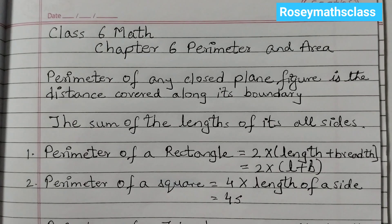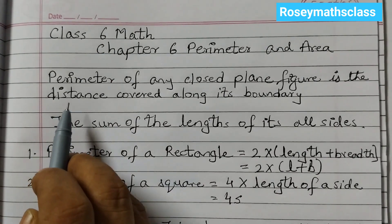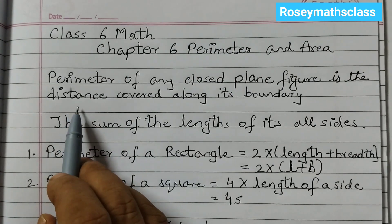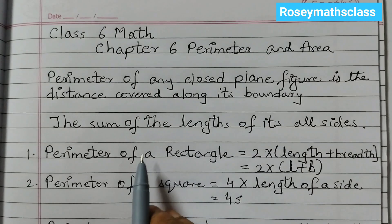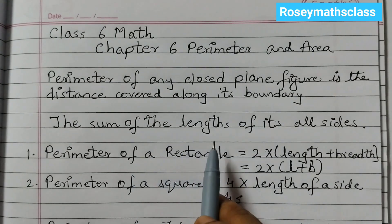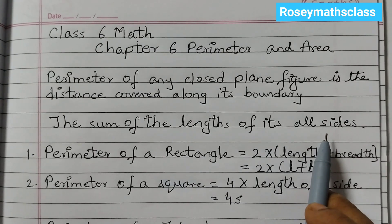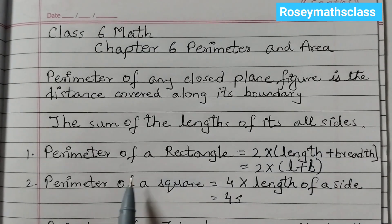First we will learn the definition of perimeter. The perimeter of any closed plane figure is the distance covered along its boundary — that is, the sum of the lengths of all its sides. If you add up all the side lengths, that is the perimeter.